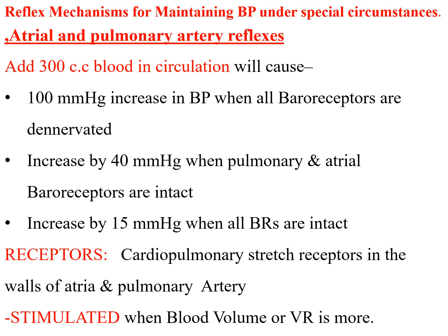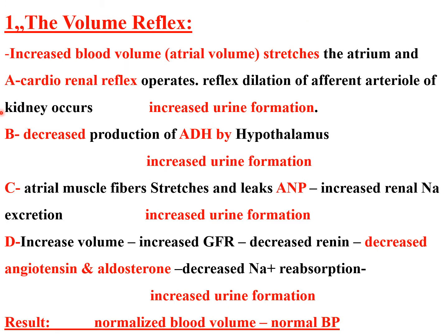These are the pulmonary artery reflexes. There are receptors in the cardiopulmonary region sensitive to stretch in the walls of the atria and pulmonary artery. The stimulus is increased blood volume or venous return. In the volume reflex, increased blood volume stretches the atrium, and four responses occur. First (A), the cardiorenal reflex: receptors in the right atrium sense stretch, send nervous impulses to the vasomotor center, which then sends impulses to the kidney causing reflex dilation of afferent arterioles, increasing GFR and urine formation.